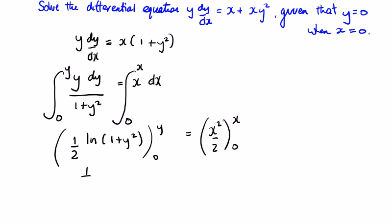We're going to get 1 over 2 by the natural log of—we could multiply by 2 first but we'll leave it like this—1 plus y squared, minus 1 over 2 by the natural log of just 1, because this y is 0. So the natural log of 1 is equal to x squared over 2.